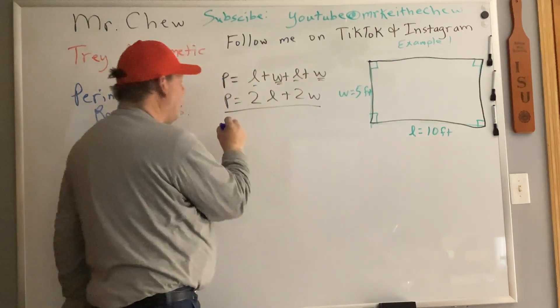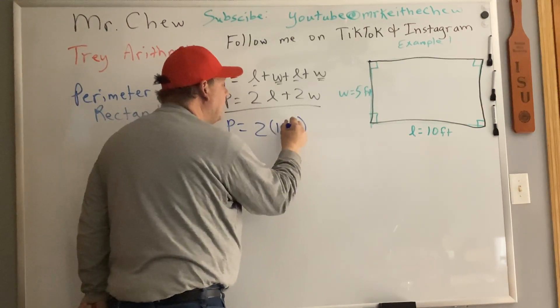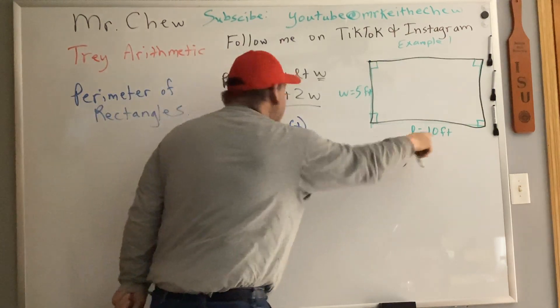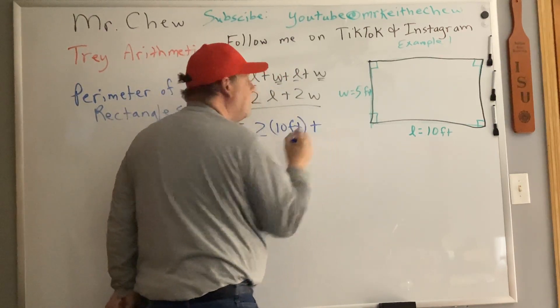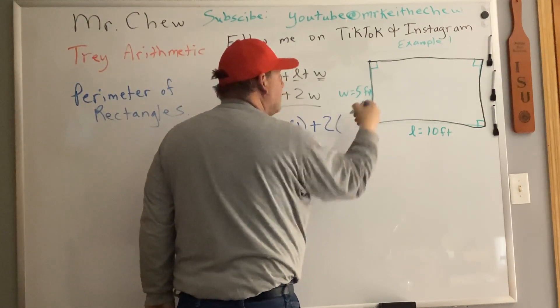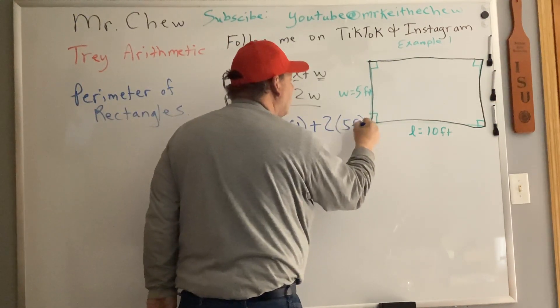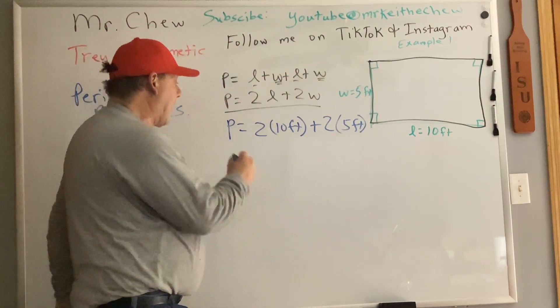You can write them in if you want or we can just say let's just substitute where the L is, let's put a 10 feet. So in the parentheses, I put 10 feet. That's what L equals. So I just put parentheses in there and write 10 feet inside. And then where the W is, I put parentheses there and I put 5 feet.